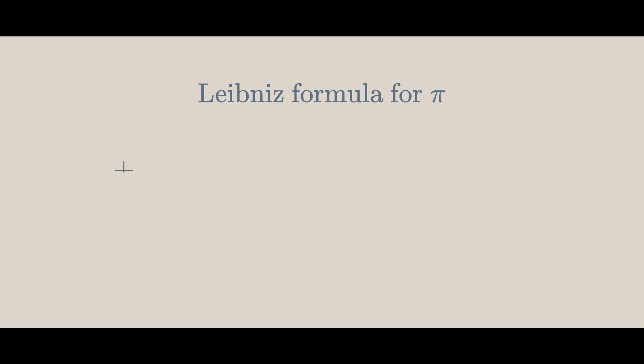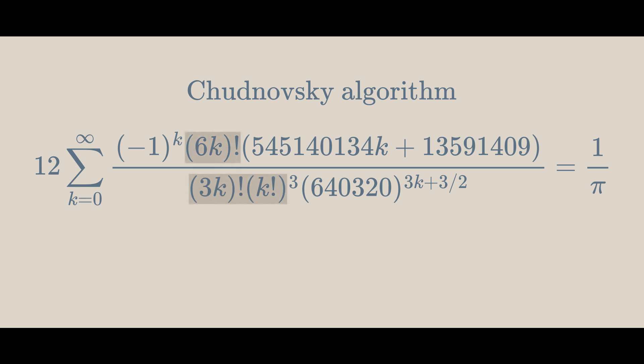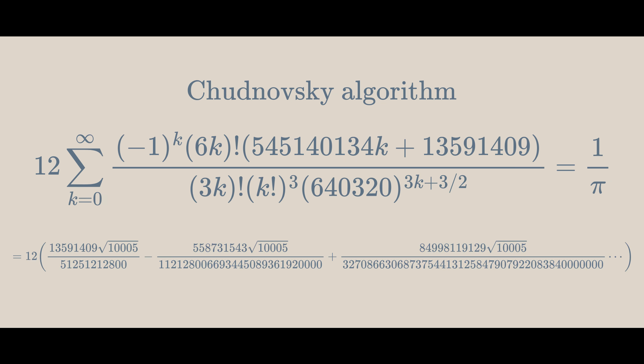A formula like the Leibniz formula for pi seems quite computationally simple, because each term is just plus or minus one over some odd number. To get from one term to the next, you simply change the sign and add two to the denominator. However, something like the Chudnovsky algorithm seems way harder to compute, with all these factorials and a fractional exponent, and there's no clear way to get from one term to the next.